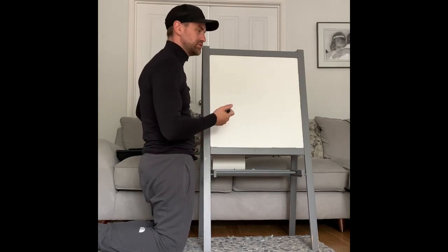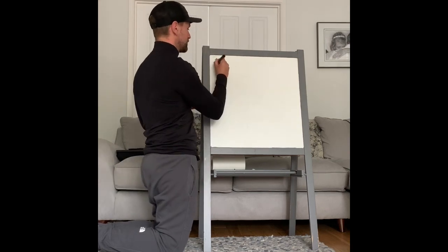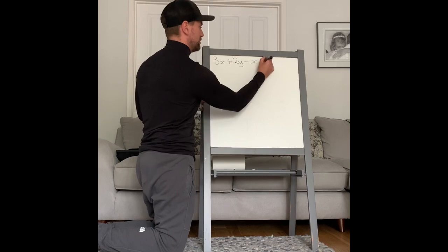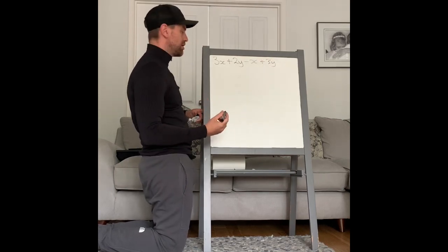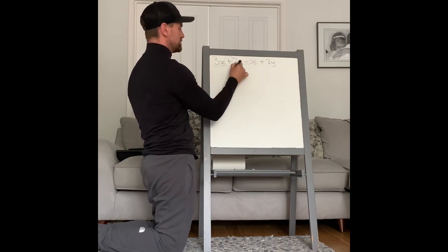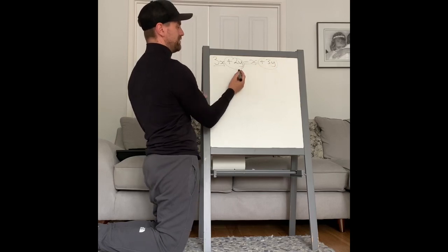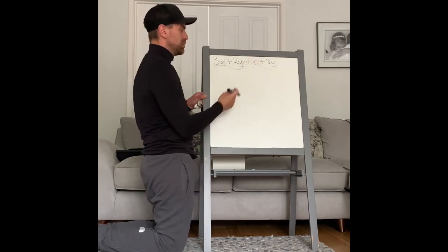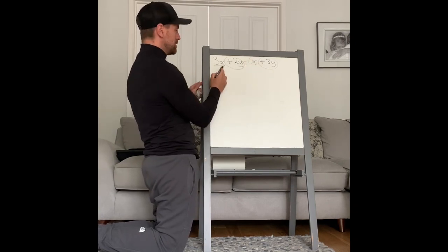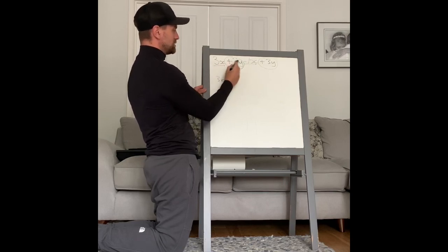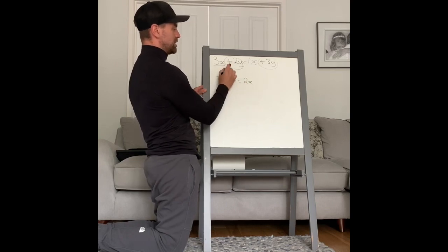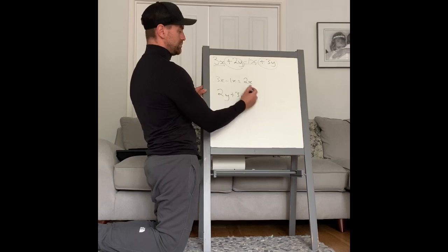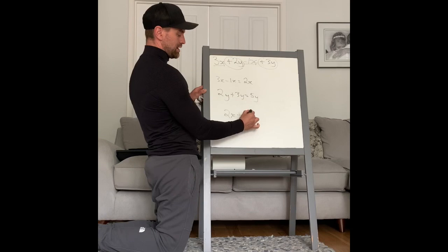Simplify 3x + 2y - x + 3y. Simplify means you collect the like terms - I've got x's and I've got y's. Remember, you always take the sign to the left: positive 3y, negative x. There's only 1x there, so put a 1 next to it to help with your workings. Collect the x's: 3x minus 1x equals 2x. Collect the y's: 2y add 3y equals 5y. So my answer is 2x + 5y.